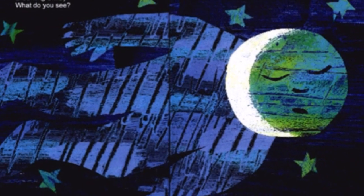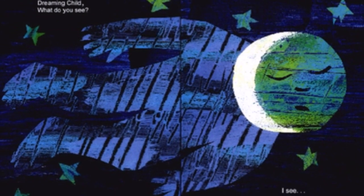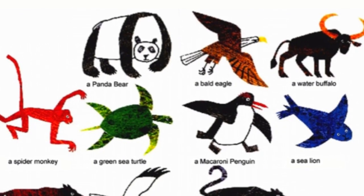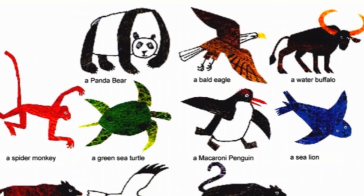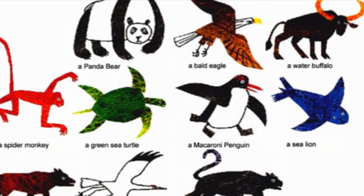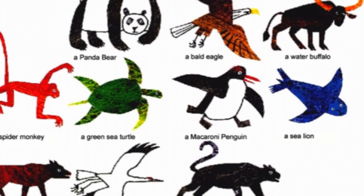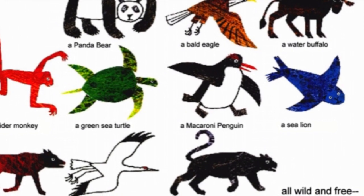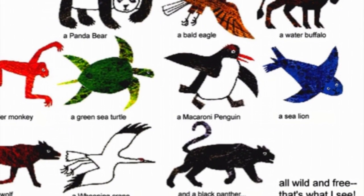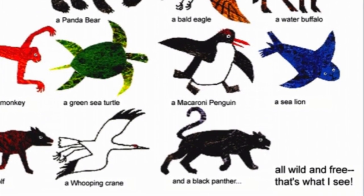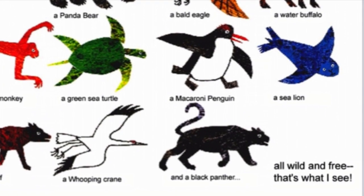Dreaming child, dreaming child, what do you see? A panda bear, a bald eagle, a water buffalo, a spider monkey, a green sea turtle, a macaroni penguin, a sea lion, a red wolf, a whooping crane and a black panther — all wild and free. That's what I see.